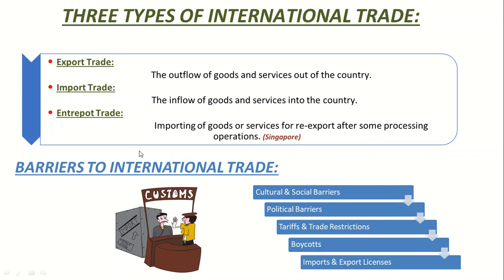What are the barriers to international trade? There could be cultural and social barriers, political barriers, tariffs and trade restrictions, boycotts, and import and export licenses. For example, there could be some Islamic countries that don't import wines or alcohol-related products. For political barriers, USA and Russia is a very simple example. Tariffs and trade restrictions could be employed by some country for specific products or companies. There could be boycotts against special products or some country as well. Import and export licenses could be employed by specific countries.